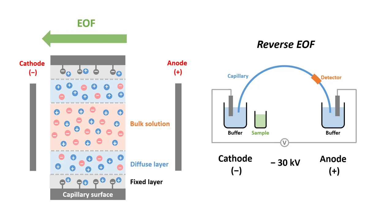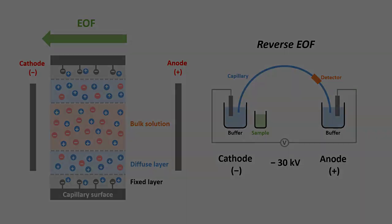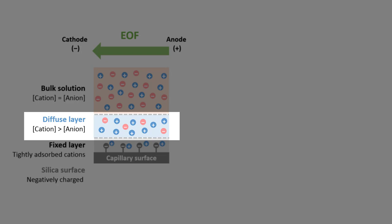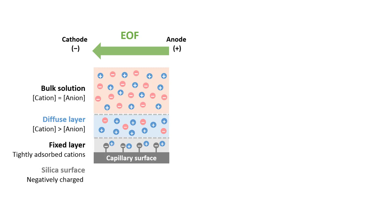How come the direction of the electro-osmotic flow is still towards the cathode? What's wrong with our modification? If we take a closer look, the diffuse layer still has a higher concentration of cations than anions. That's why when the voltage is applied, the diffuse layer will still be attracted towards the cathode, dragging the bulk solution along.